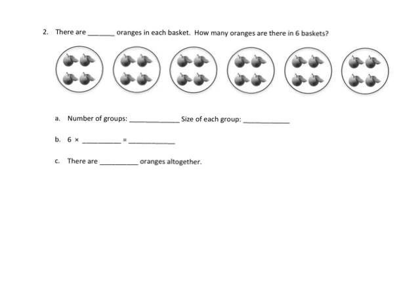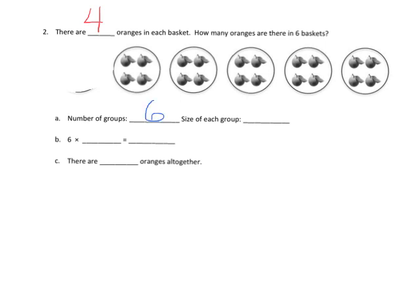For this problem it says: there are blank oranges in each basket — how many oranges are in six baskets? We start by saying there are four oranges in each basket, because we can see four right there. The number of groups is six, because there are six baskets. So the multiplication is six times four, which is 24.